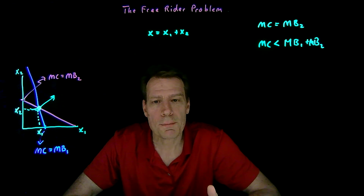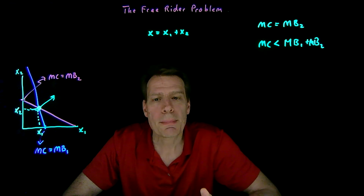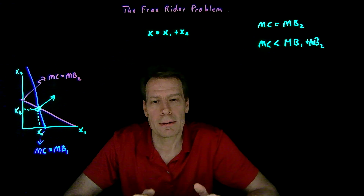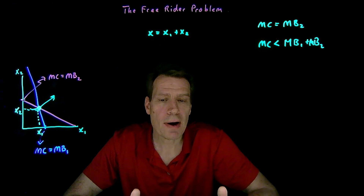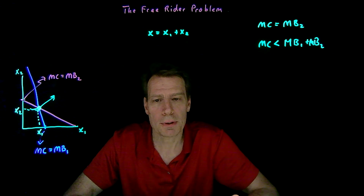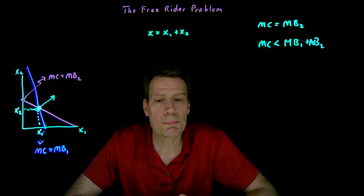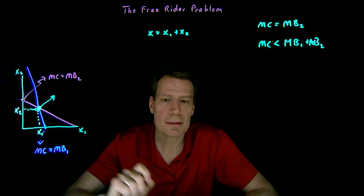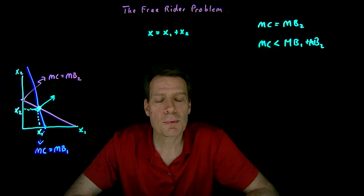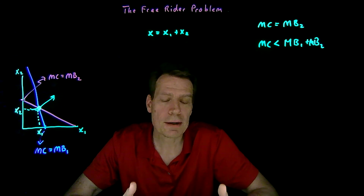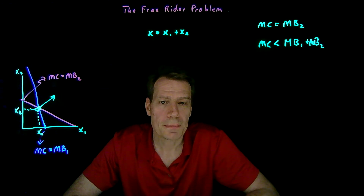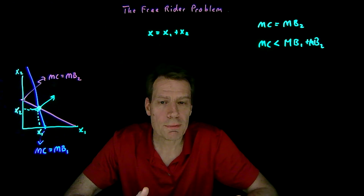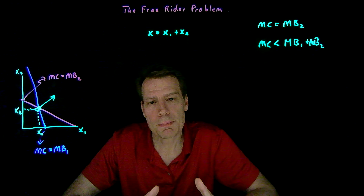Alternatively, we can think of the government solving that prisoner's dilemma by simply forcing us to cooperate — taxing us and providing the efficient level of the public good directly. We would prefer that outcome to the outcome where we individually go to the store and end up at the Nash equilibrium, because it enforces the cooperation that actually makes both of us better off. So whether through subsidies or through direct provision, the government can solve this public goods problem.